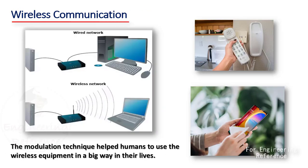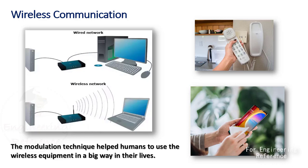Wireless communication. By using modulation to transmit the signals through space to long distances, we have removed the need for wires in the communication systems. The modulation technique helped humans to use wireless equipment in a big way in their lives. Telephones no longer had to remain plugged into a wall. All these benefits of modulation have raised our standards of living considerably.